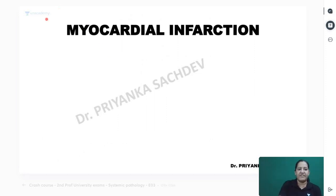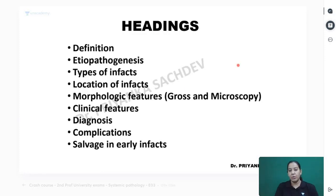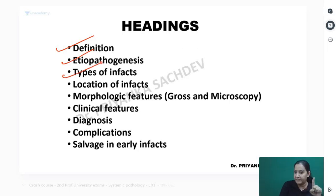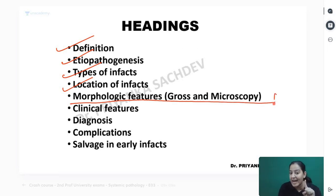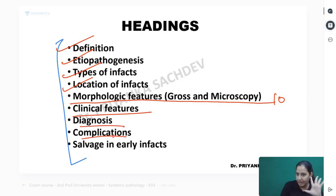Now let me teach you MI. MI is a long question which will come for five marks. You should define MI, tell the etiopathogenesis, types of infarcts, location of infarcts, morphological features with diagrams, clinical features, diagnosis, and complications. For five marks, morphology is the most important - you need to draw multiple diagrams. For three marks, type of infarcts, etiopathogenesis, and clinical diagnosis are each separate questions.